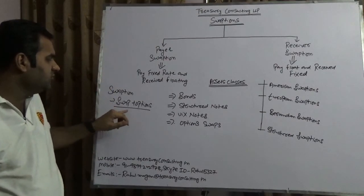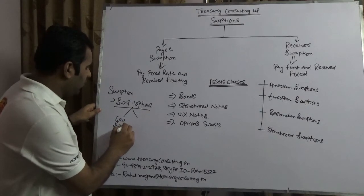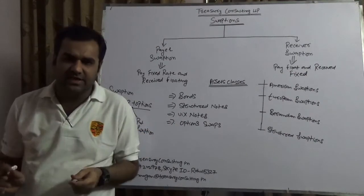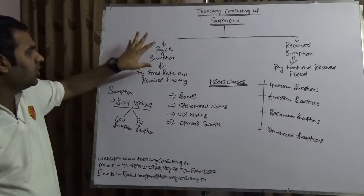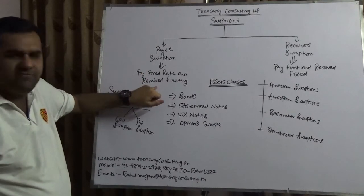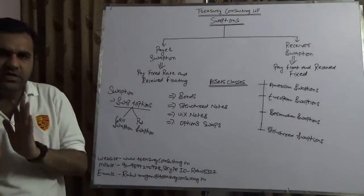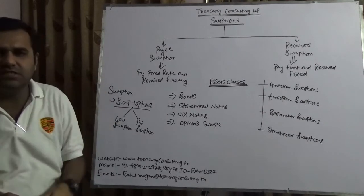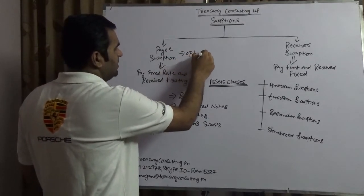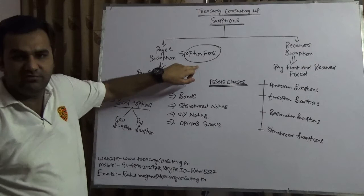Swaption is nothing but swap plus option. Once you have an option on the swap, you can have a call swaption or a put swaption. However, we are here discussing payer swaption and receiver swaption. Payer swaption means when you pay fixed rate and receive floating. Receiver swaption means when you pay floating and receive fixed. Please don't forget that since swaption is option plus swap, you need to pay the option fee upfront.